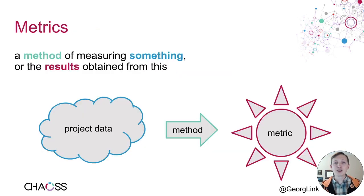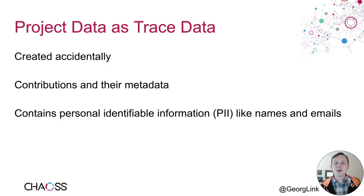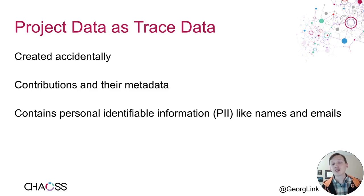When I talk about metrics, it's a method of measuring something, and we also refer to the results obtained from this. The project data is nebulous — we have a method to then get clear insights. That data is usually trace data, created accidentally. When we contribute to open source projects, we are creating contributions that are public and shared with others, with metadata like who made the contribution and when. We didn't create the data to be analyzed — we wanted to contribute to open source, but we can analyze it.